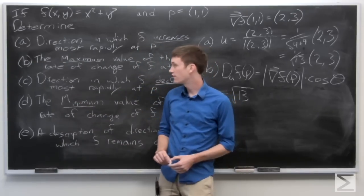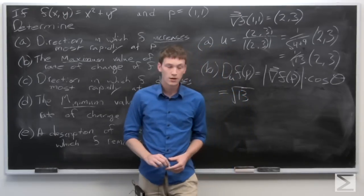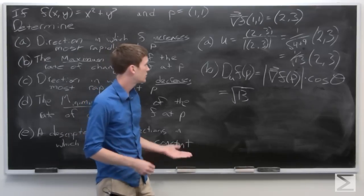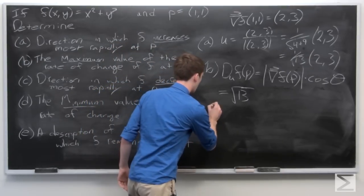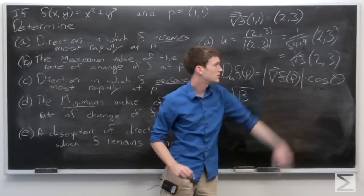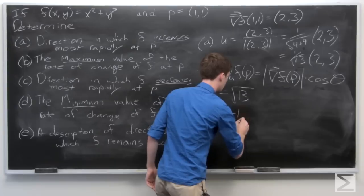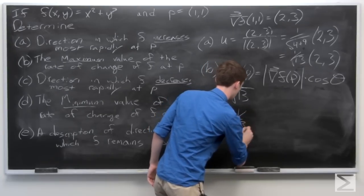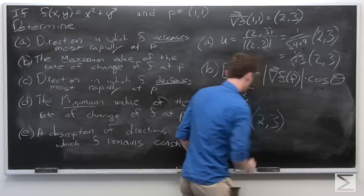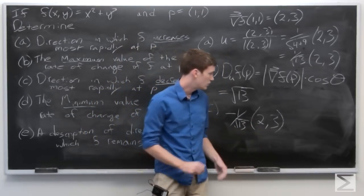For part c, we want to find the direction in which f decreases most rapidly at p. That's just going to be the opposite direction of the gradient vector. So we look at our answer for part a — 1 over the square root of 13 times ⟨2, 3⟩ — and tack a negative sign in front of it, giving us negative 1 over the square root of 13 times the vector ⟨2, 3⟩.